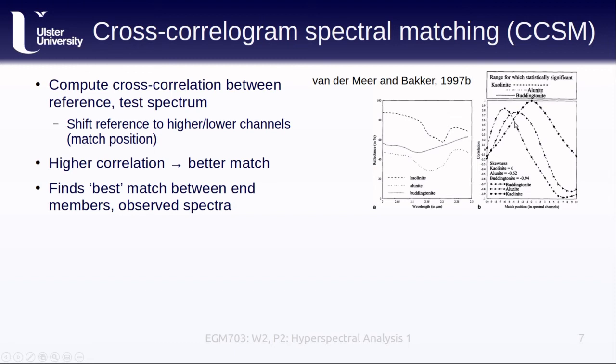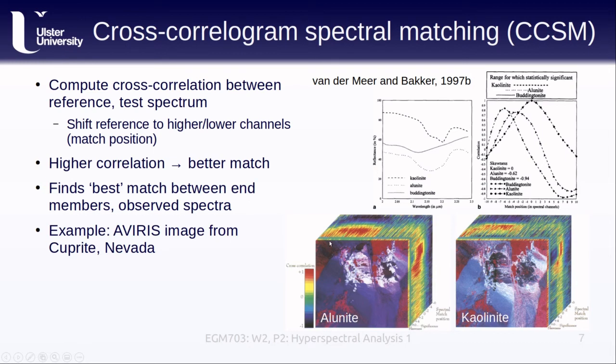This approach finds the best match between our end-members and the observed spectra. Again, we're only going to be limited here by the end-member spectra that we're using. These examples show a false color image of the correlation, skewness, and significance for each pixel in the AVIRIS image and the given mineral, with alunite on the left and kaolinite on the right. White pixels indicate a better match to the reference mineral. We can see that most of our alunite is located more in the upper center and right portion of the image, while kaolinite is located in more of a ring around these features here. The sides of these cubes indicate the correlation values for the top row and the rightmost column of the image at the different match positions, in order to show how the correlation changes with the match position.